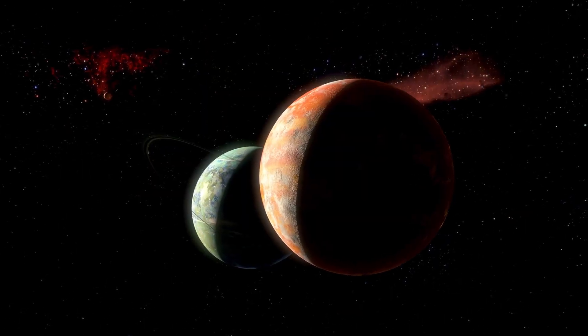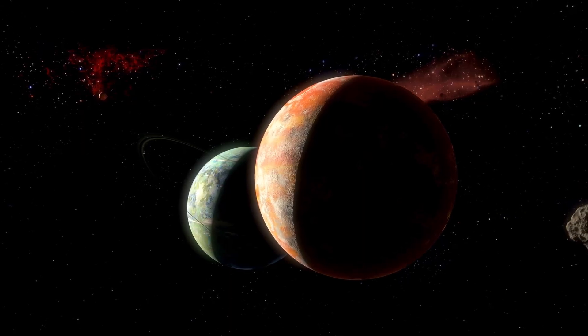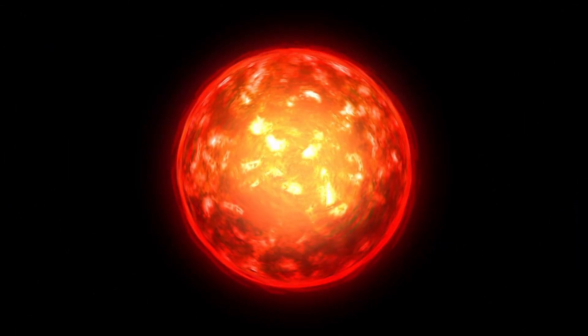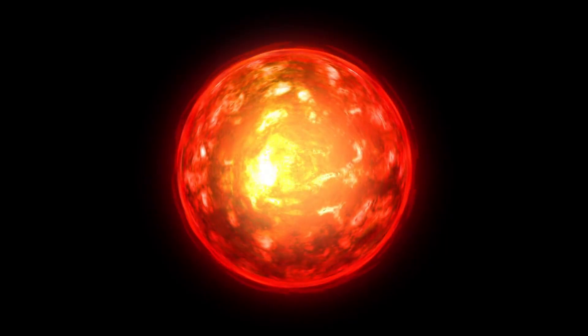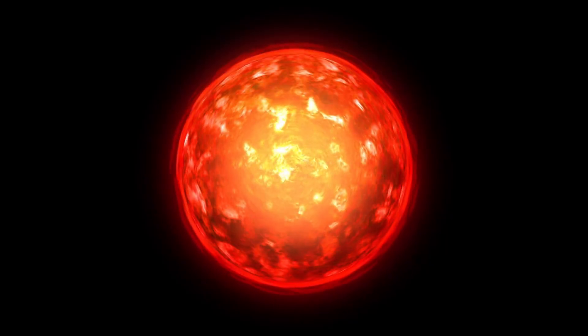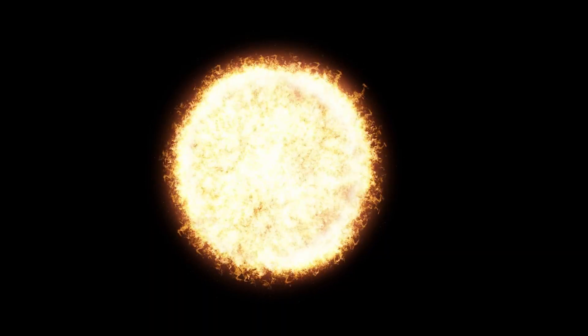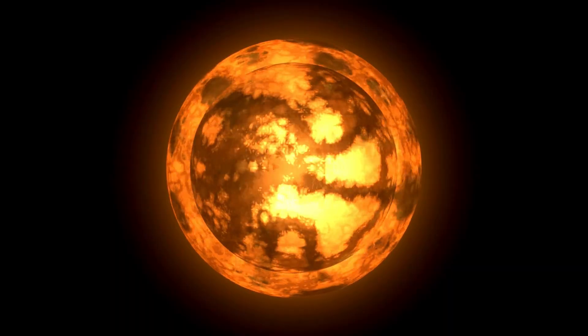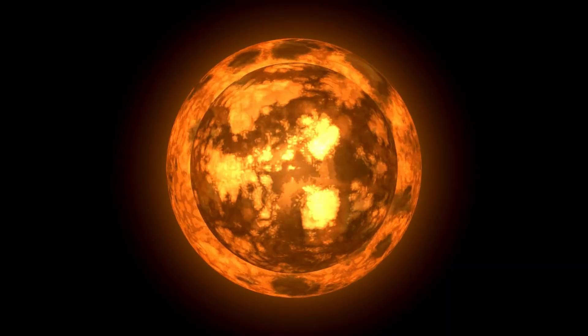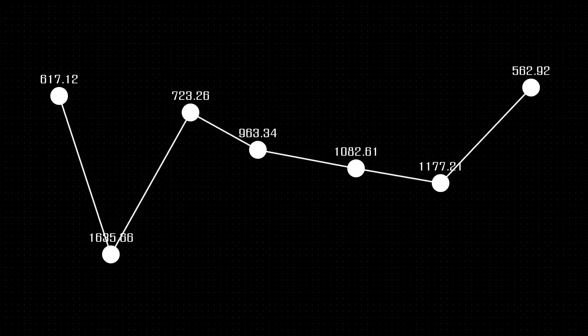While scientists diligently observe Betelgeuse, the star's evolving brightness also shines a spotlight on the critical role that stellar mass loss plays in the late stages of a red supergiant's life. These stars are notorious for shedding material at extraordinary rates, with gas and dust expelled into surrounding space. Over time, this shedding can reshape the star's internal structure and contribute to instability.